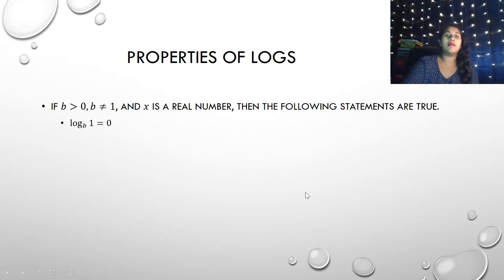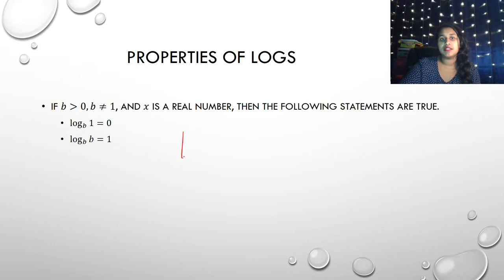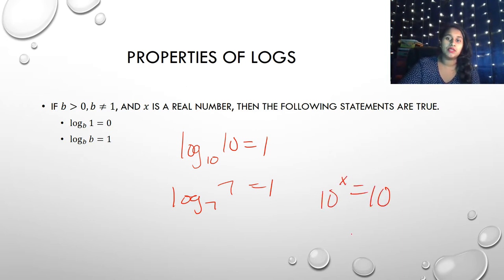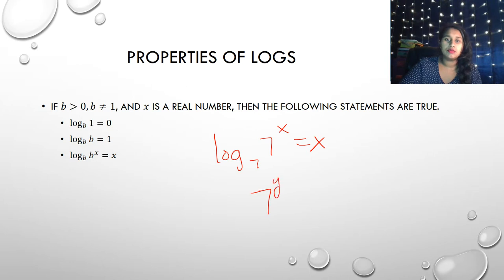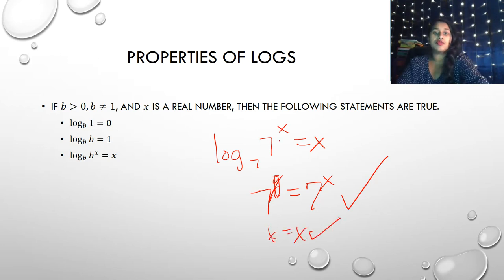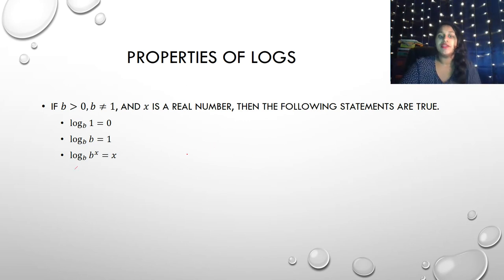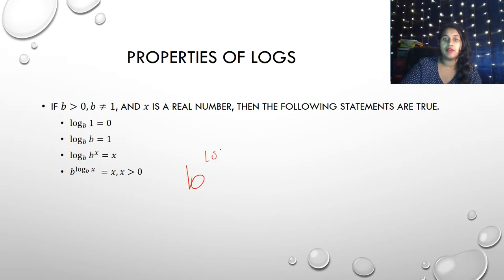Let's talk about some properties of logs. Log of 1 equals 0 — memorize that. Log base b of b equals 1: for example, log base 10 of 10 equals 1, log base 7 of 7 equals 1, because 10 to the what equals 10 — it's always to the first power. Also, log base b of b to the x equals x: for instance, log base 7 of 7 to the x equals x, because they are inverses. And if you raise a base to the power log-same-base of x, you're left with just x.